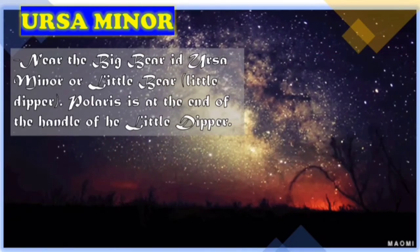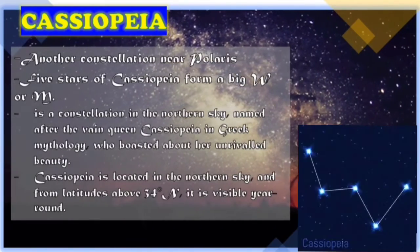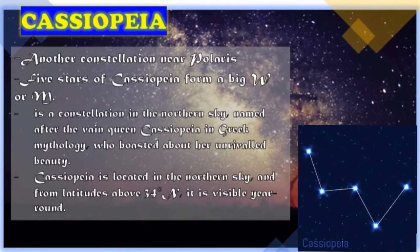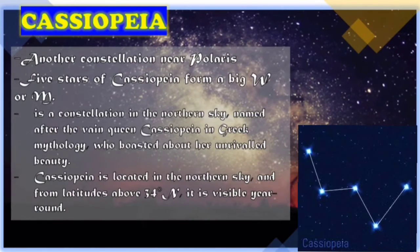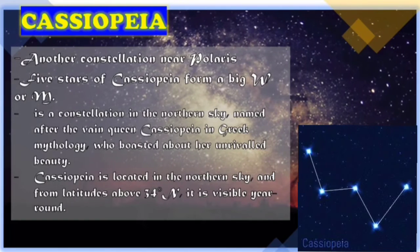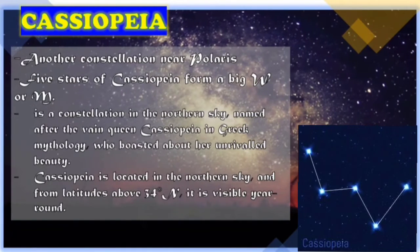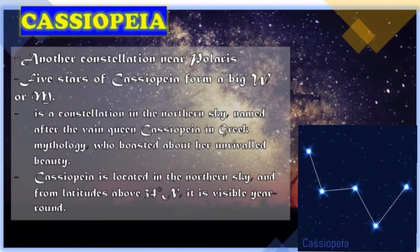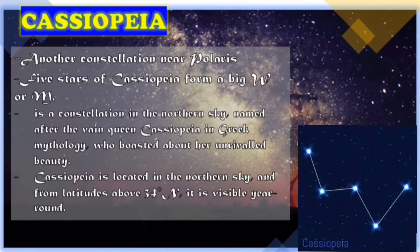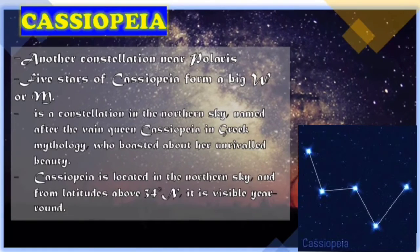Next one is Cassiopeia. The five stars of Cassiopeia form a big W or M shape. It is a constellation in the northern sky named after the vain queen Cassiopeia in Greek mythology, who boasted about her unrivaled beauty. Cassiopeia is located in the northern sky and from latitudes above 34 degrees north, it is visible year-round.